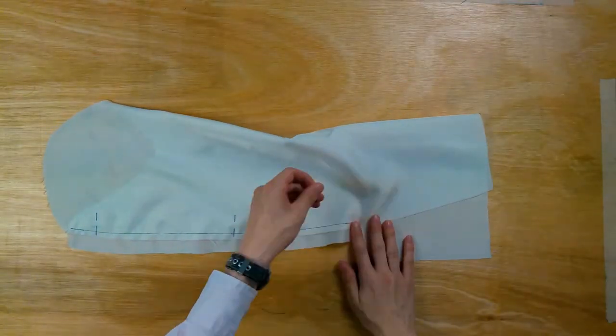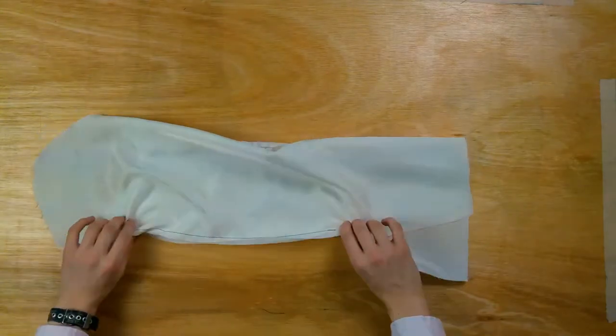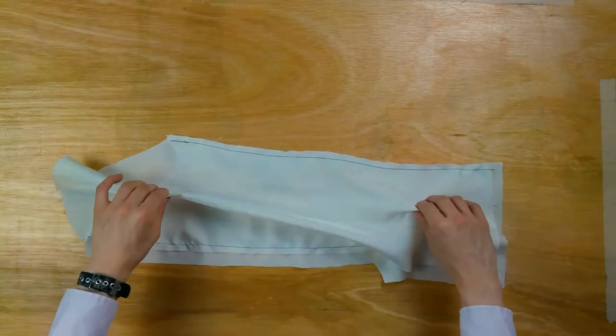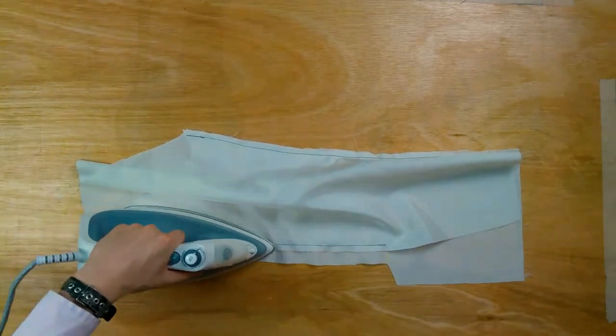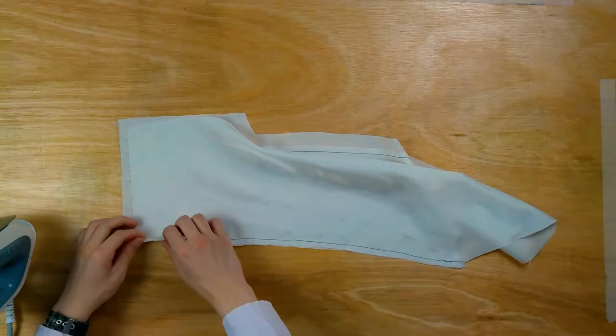Press the seam flat, and then press the seam over to one side, either with a sleeve board or by folding it over. Don't snip the seam allowances on lining, because that will make it weaker.